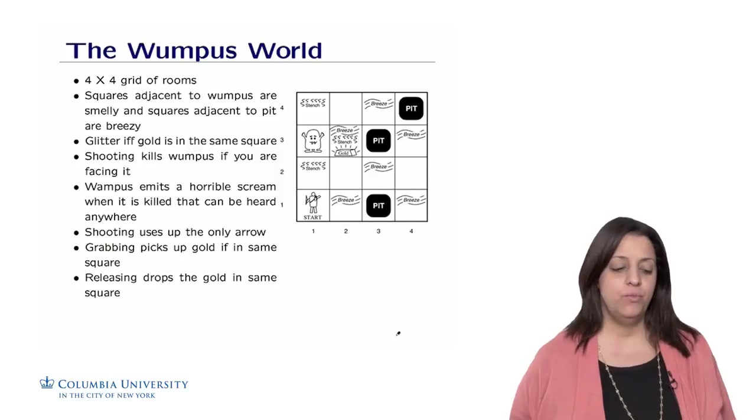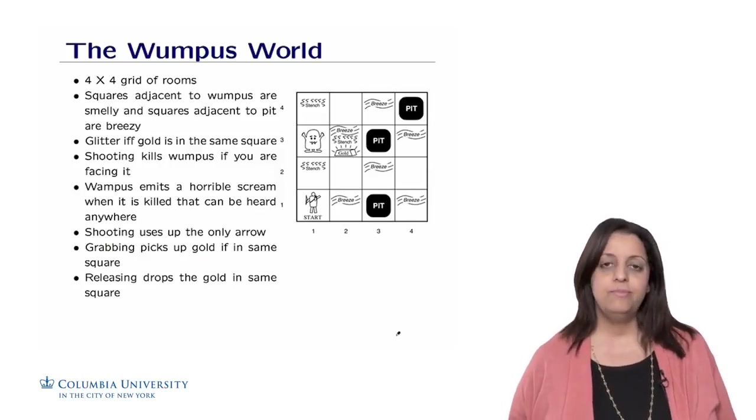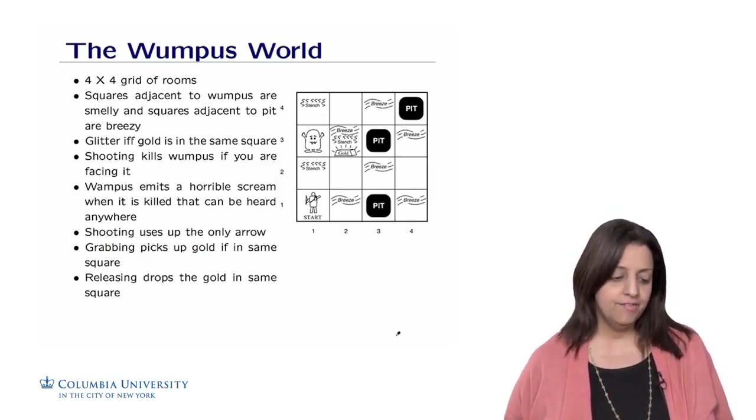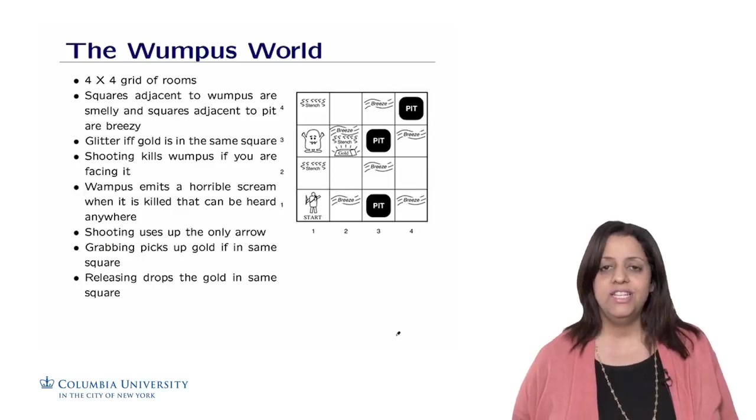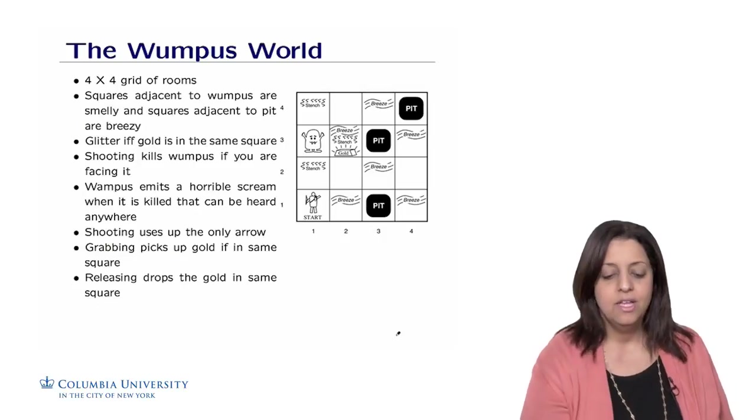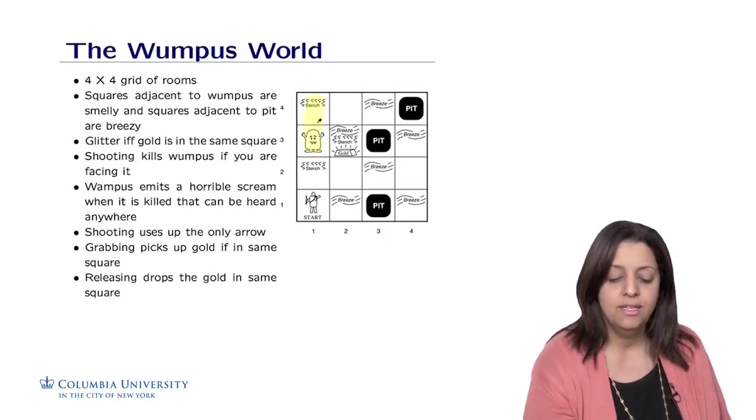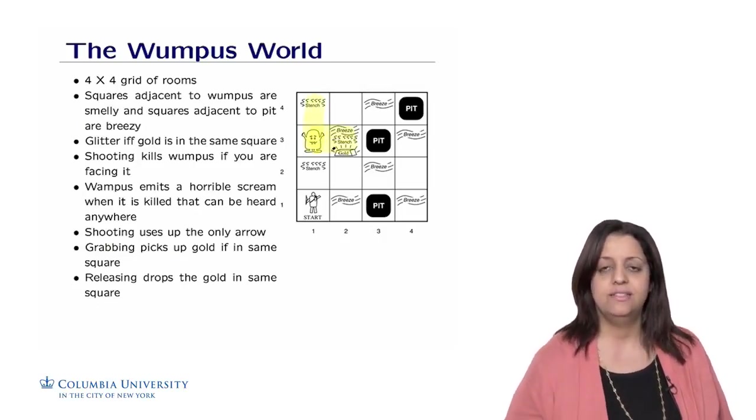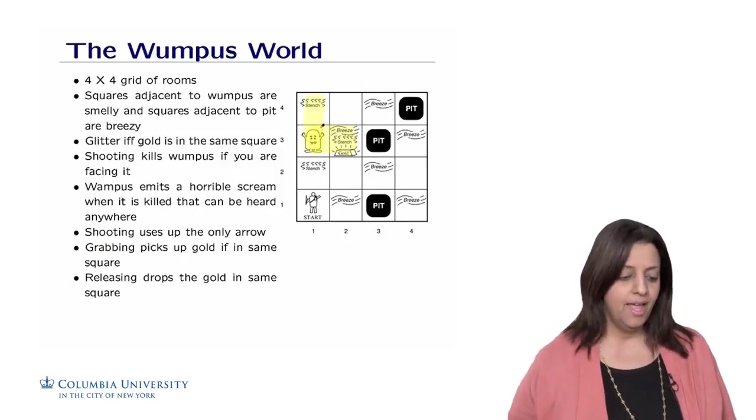Let's start formalizing the problem of the Wumpus world. We have a four by four grid of rooms in the cave. Squares are called adjacent if they are on the same column or the same line, so anything that's on the diagonal is not. For example, these two are adjacent and these two are adjacent, but these two are not.